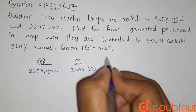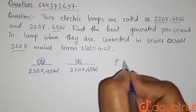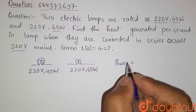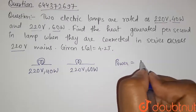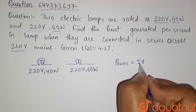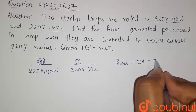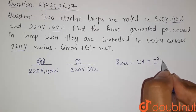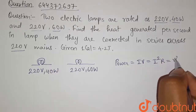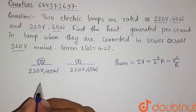Heat generated per second is known as the power generated by the bulbs. Power is given by I times V — current flowing through the lamps times potential difference — or we can write it as I squared times R, where R is the resistance, or as V squared divided by R.